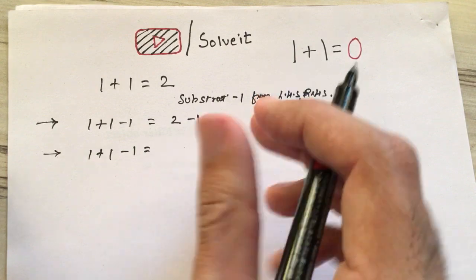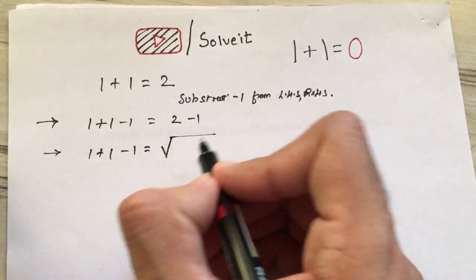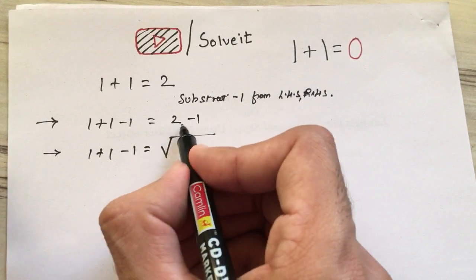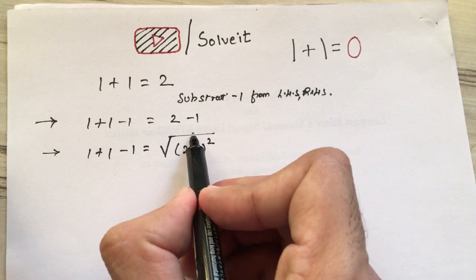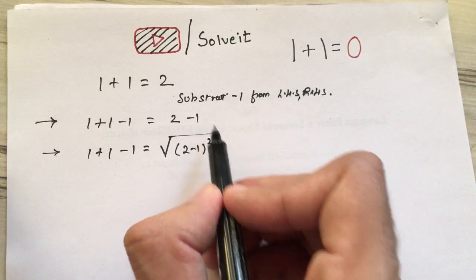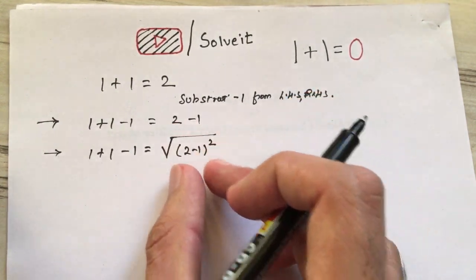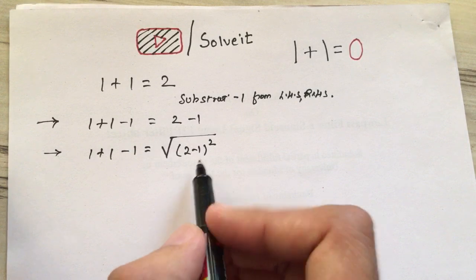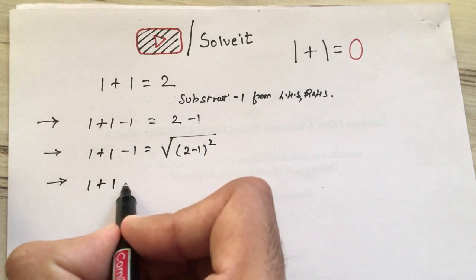We won't be violating any rules. I would like to take a square root here of 2-1 and I'll square it again. If you see, square and square root get cancelled and we get the same output as our previous step. It literally means 2-1, nothing else. We haven't violated anything till now.